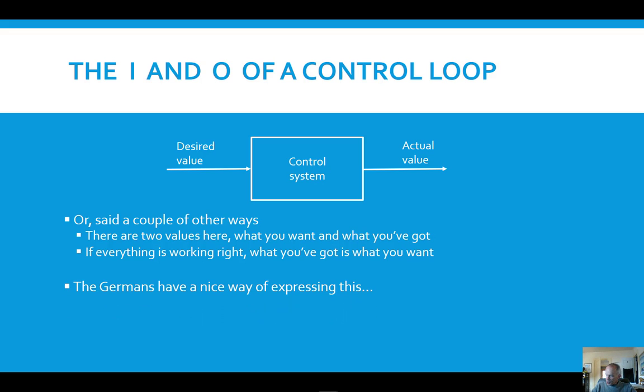I've taught controls in Germany also, in Munich and in Karlsruhe. The Germans have a very nice way of expressing this concept. They call the input value the Sollwert or the should value. And then the output value is called the Istwert which is the is value.